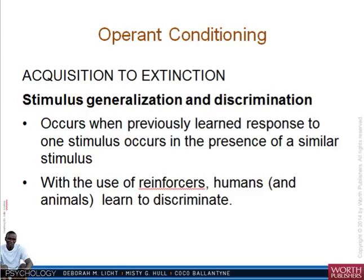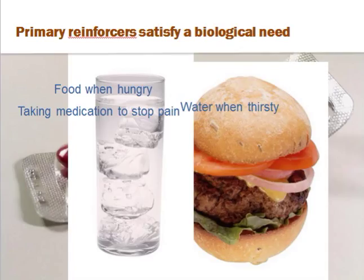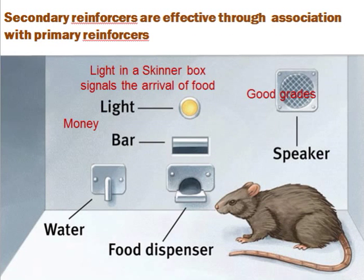In terms of acquisition, stimulus generalization and discrimination occur when a previously learned response to one stimulus occurs in the presence of a similar stimulus, and with reinforcers, humans and animals learn to discriminate. There are primary reinforcers, which satisfy a biological need — food when hungry, medication to stop pain, water when thirsty — and secondary reinforcers, which are effective through association with primary reinforcers, such as the light in the Skinner box signaling food, or money, or good grades for students.